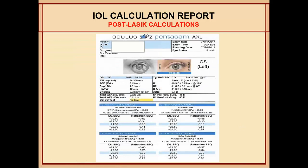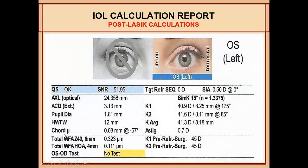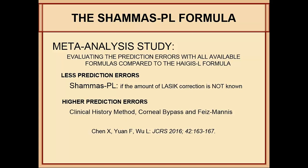For post-LASIK calculations, if you know the pre-refractive surgery K power, you can enter it for special calculations. The Pentacam based their measurements on my formula, the Shammas PL formula. A meta-analysis study evaluated prediction error across all available formulas compared to the HAIGIS-L formula and found that when the amount of laser correction is unknown, the Shammas PL formula has the least prediction error, while the clinical history method and other formulas have much higher prediction error.